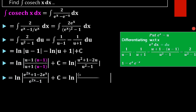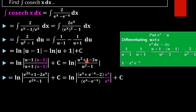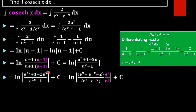Now substituting e^x back in place of u: u² becomes e^(2x), minus 2u becomes minus 2e^x, plus 1 remains, all divided by e^(2x) minus 1. Taking e^x outside from each term in the numerator and denominator helps us recognize the hyperbolic functions.